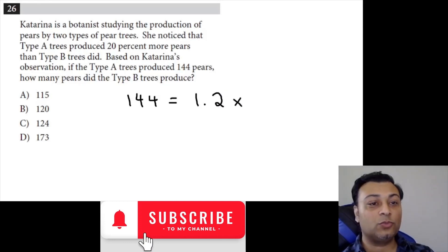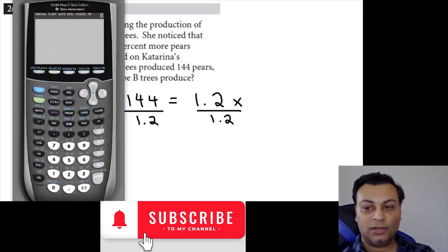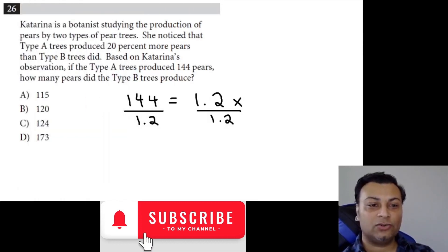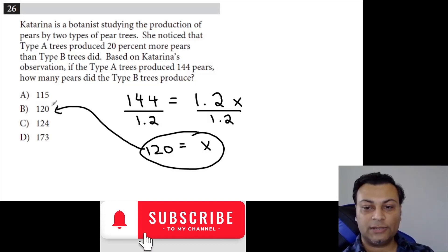20% more means 1.2. So now you divide by 1.2 on both sides, and you would get 144 divided by 1.2, which is 120. So x is going to be 120, and that is our answer, which is option B.